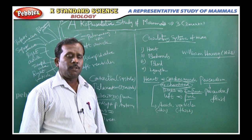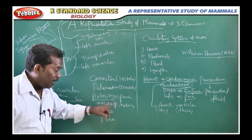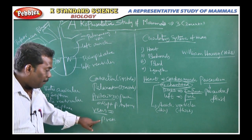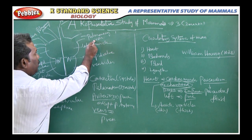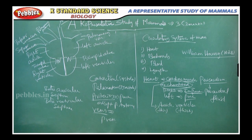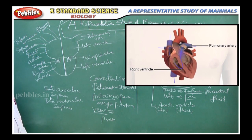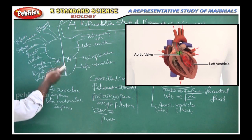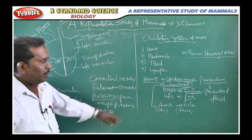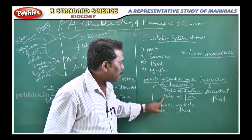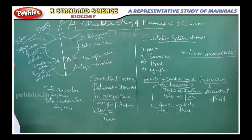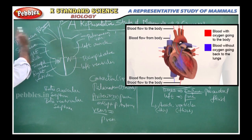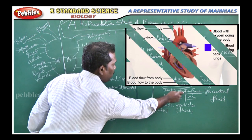Arteries always carry oxygenated blood, except the pulmonary artery. Veins carry deoxygenated blood, except the pulmonary vein. The pulmonary vein is present on the left side of the heart and is involved in pure blood circulation. The pulmonary artery is present on the right side, which handles deoxygenated blood circulation.